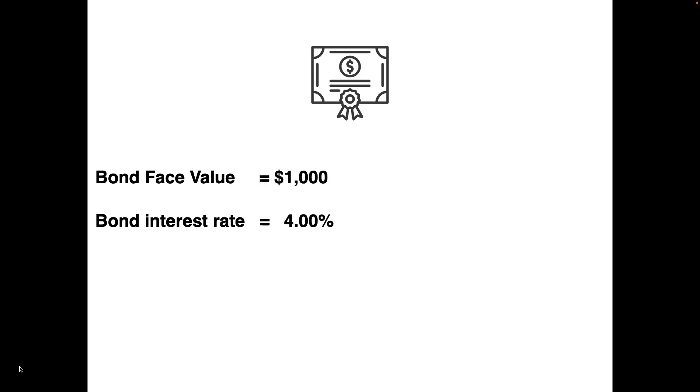Suppose you purchase a bond with a face value of $1,000 and an interest rate (sometimes called the coupon rate) of 4%. Every year, the bond will pay you an interest payment of $40.